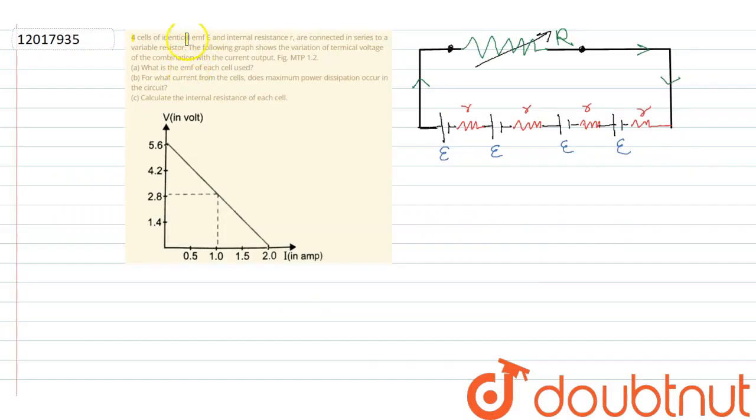Hello everyone, welcome to Doubtnet. Let's see the question. The question is: four cells of identical EMF E and internal resistance r are connected in series to a variable resistor. Here, capital R is the variable resistor.